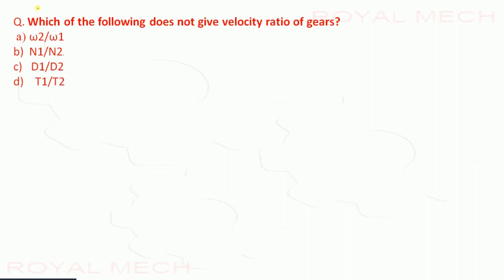Question 7: Which of the following does not give the velocity ratio of gears? Option A: ω₂/ω₁ — this is a velocity ratio. Option B: speed of gear 1 upon speed of gear 2 — this is not a velocity ratio; it is the speed ratio in reverse. Therefore option B is the correct answer.